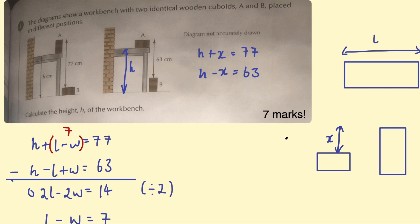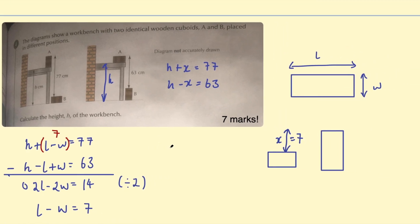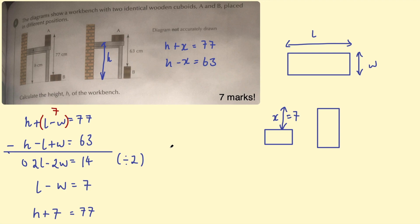Clearly, that something, that difference there is 7. This equals 7. The difference between the length and the width. And H must be 70. Okay. So I personally, if you want to know my opinion, I don't think that's quite worth 7 marks.